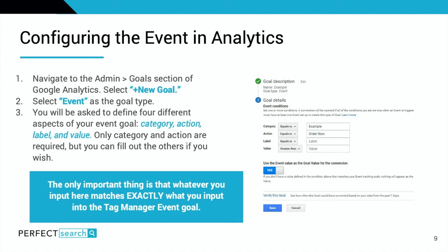Now you want to configure this event in Google Analytics itself — up until this point we've been in Google Tag Manager, now it's time to head to GA. Once in the correct property of Google Analytics, navigate to the admin section, select goals, and then select new goal. Since we're setting up event tracking, select event as the goal type. You'll again be asked to define category, action, label, and value — only category and action are required. The most important aspect is that whatever you input here in GA matches exactly what you entered in Google Tag Manager. In our example, the category is 'Example' and the action is 'Order Now.'